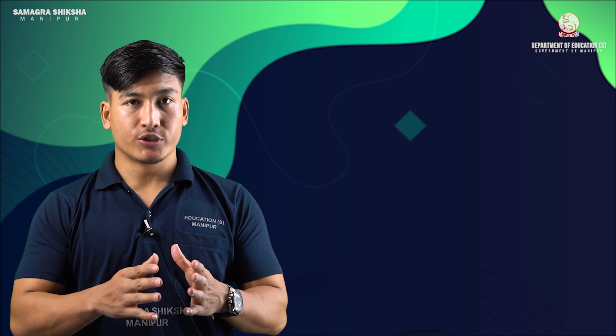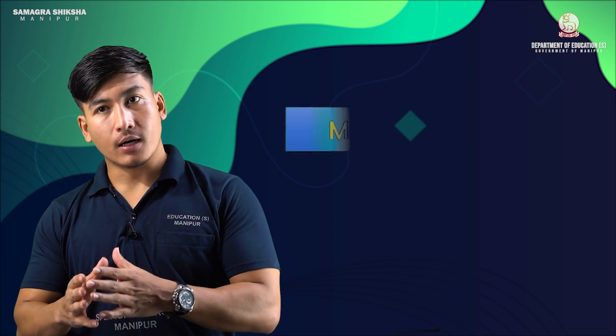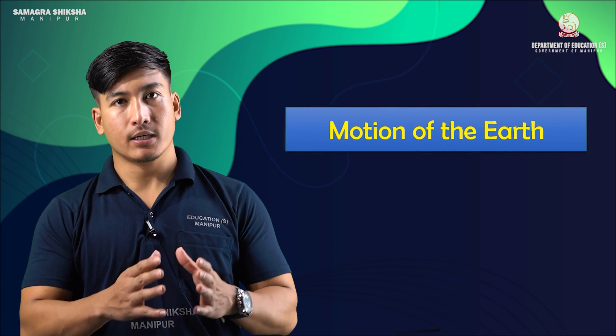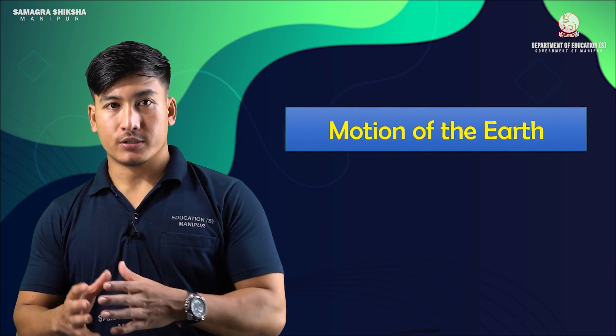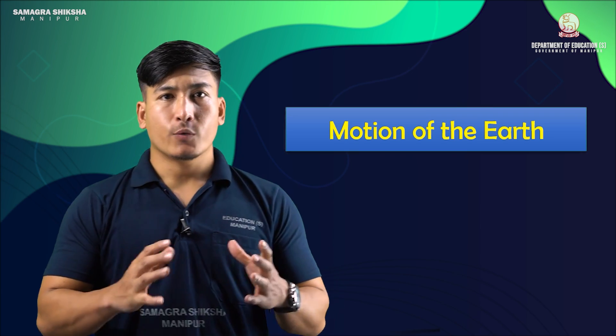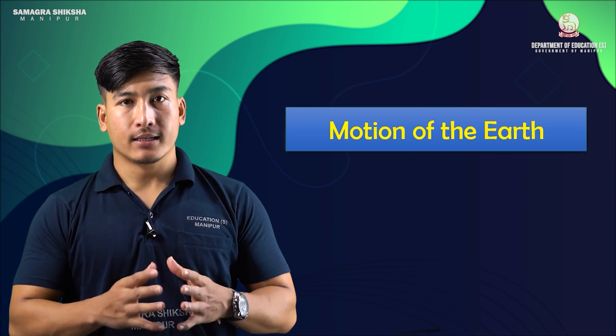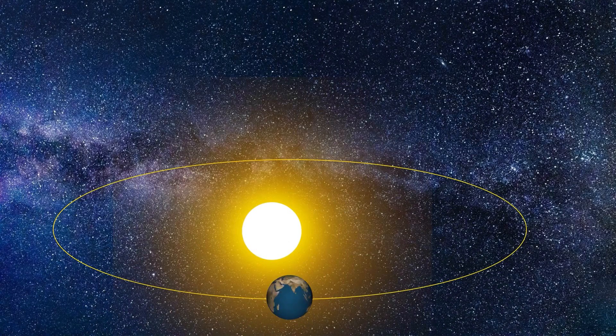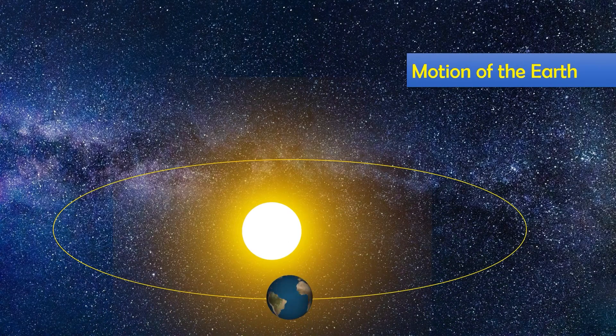Social science chapter number 3: Motions of the Earth. We know that like other planets, our earth has two motions.